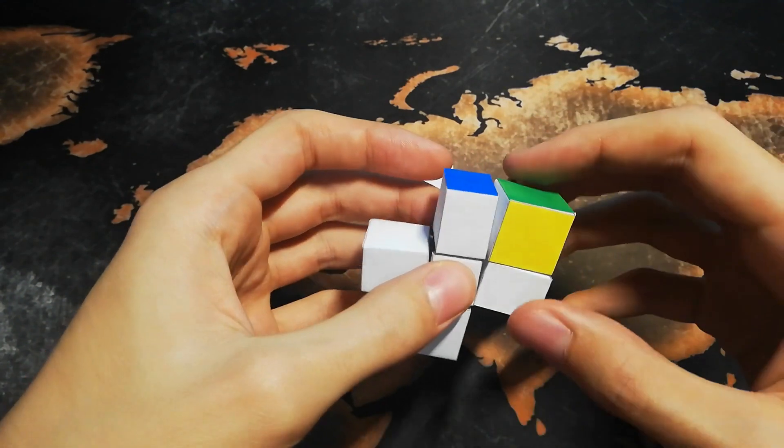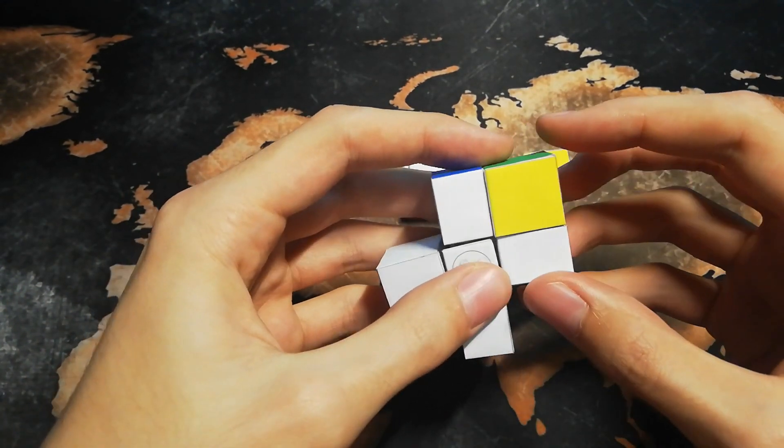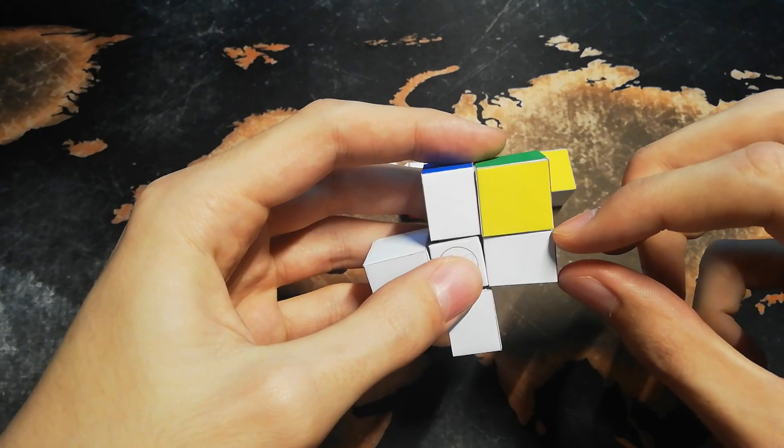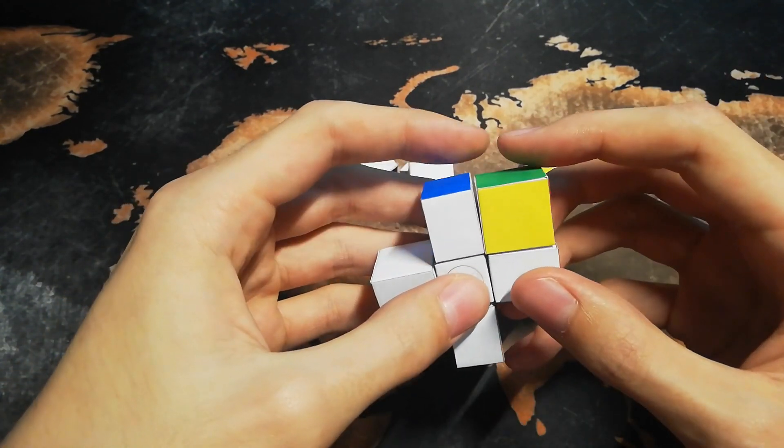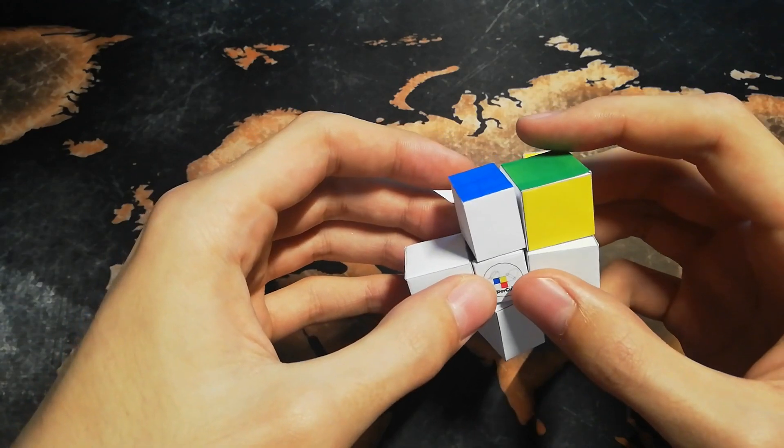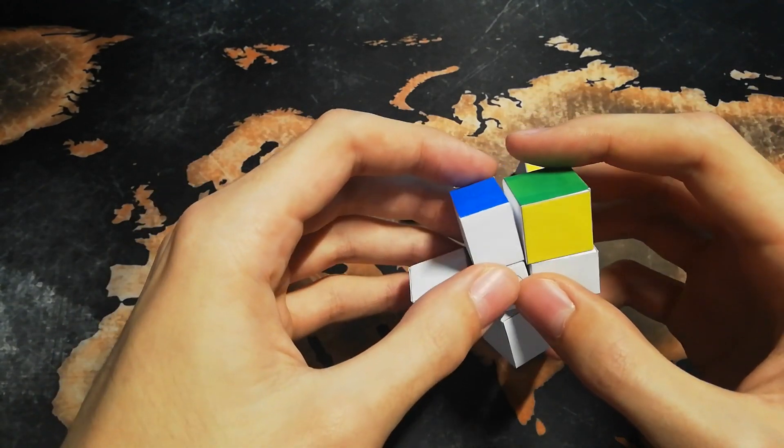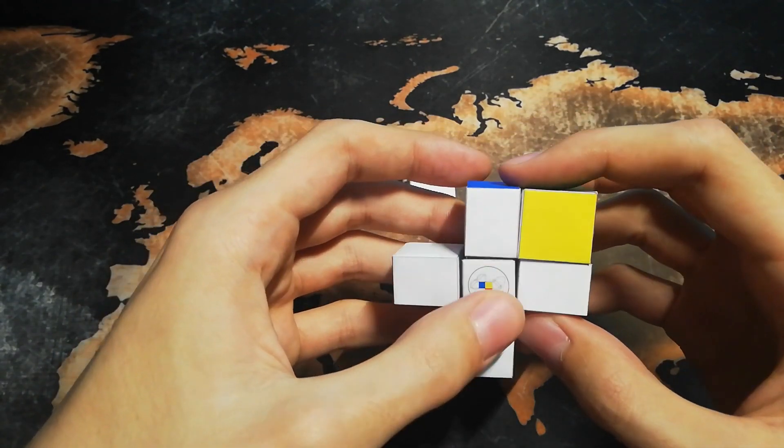You may have already noticed that the puzzle is a bit unproportional. Like you can see here, this length is smaller than this length. I originally wanted to build it so that every cubie is 2cm in each direction.